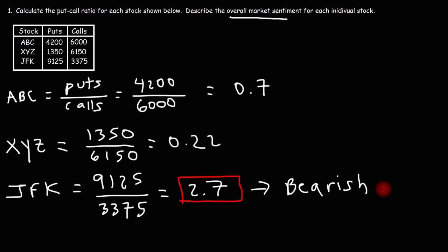A put option gives the owner the right to sell a stock at a predetermined price. A call option gives the owner the right to buy a stock at a certain price. Now, whenever the stock price goes up, the value of the call options go up. If stocks are going down in value, the value of put options go up.